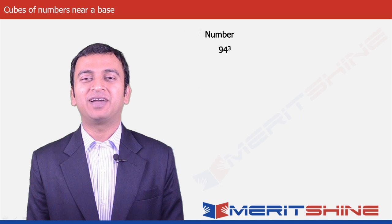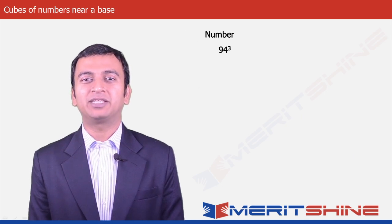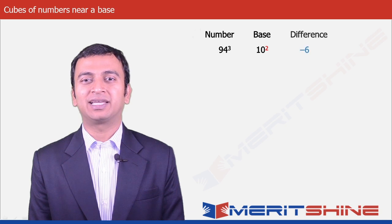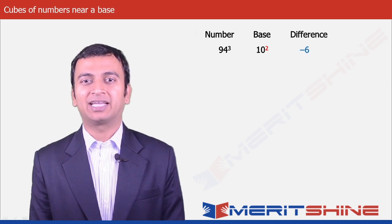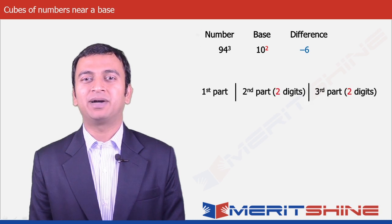Let us now try to find the cube of 94. Here our base would be 100 and the difference would be minus 6, which we will call as x. Now we can proceed to write down our answer, which would be in 3 parts.